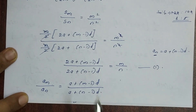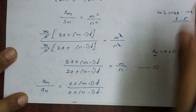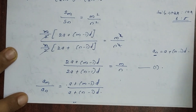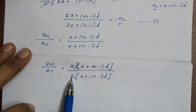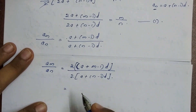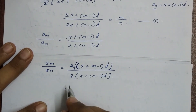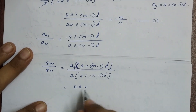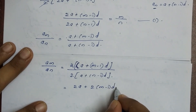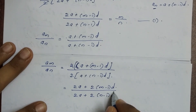To solve this, we multiply both numerator and denominator by 2. So the numerator becomes 2a + 2(m-1)d, and the denominator becomes 2a + 2(n-1)d.